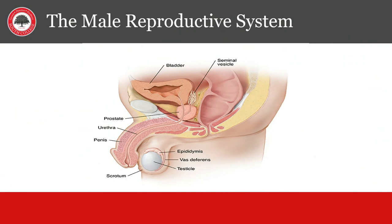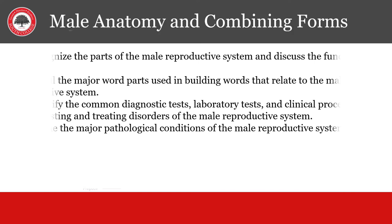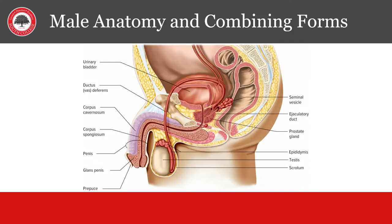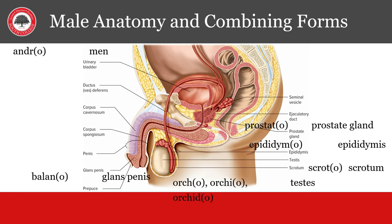Now on to the male reproductive system. Here is the male anatomy with the most important combining forms. Andro means men. Glano refers to the glans penis. Prostato refers to the prostate gland. Epididymo refers to the epididymis. Scrotal refers to the scrotum. And finally orcho, orchido, and orchido all refer to the testes.